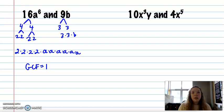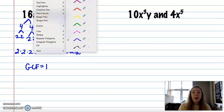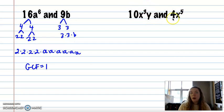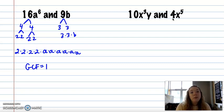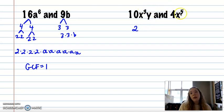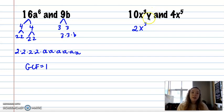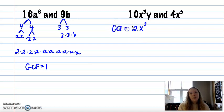For 10x cubed and 4x to the 5th, I'm not going to do the full written-out process. The largest coefficient I can take out of 10 and 4 is 2. For the x's, there are 3 here and 5 here, so the most I can take out would be x cubed. And y is only in one monomial, so I can't take out any y's. So my greatest common factor is 2x cubed.